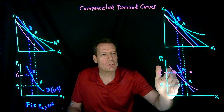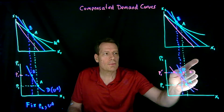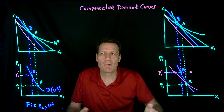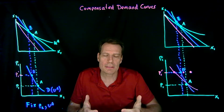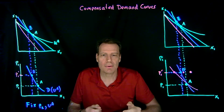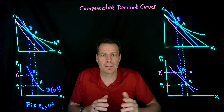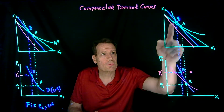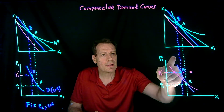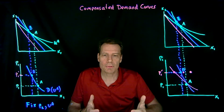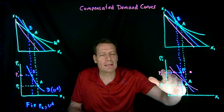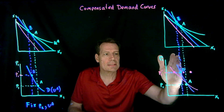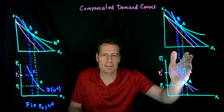We can now see the relationship between the compensated and regular demand curves depending on what kind of good X1 is. The compensated demand curve doesn't change as the type of good changes, because it's derived from a single indifference curve and incorporates only the substitution effect — we don't need to know whether goods are normal, inferior, quasi-linear, or homothetic. The regular demand curve, however, will be shallower if the good is normal, identical to the compensated curve if quasi-linear, steeper if inferior, and upward-sloping if it's a Giffen good.